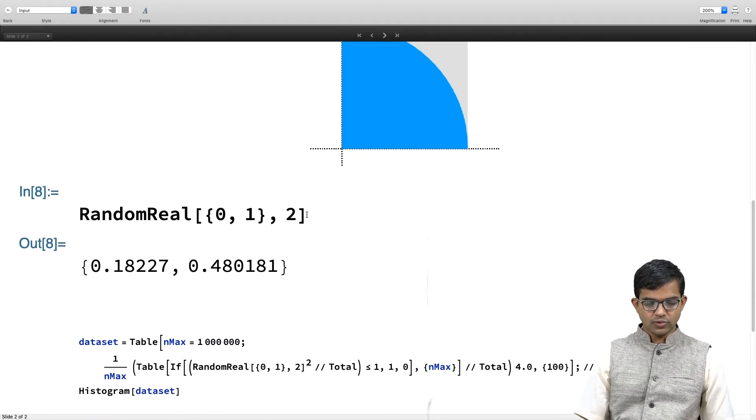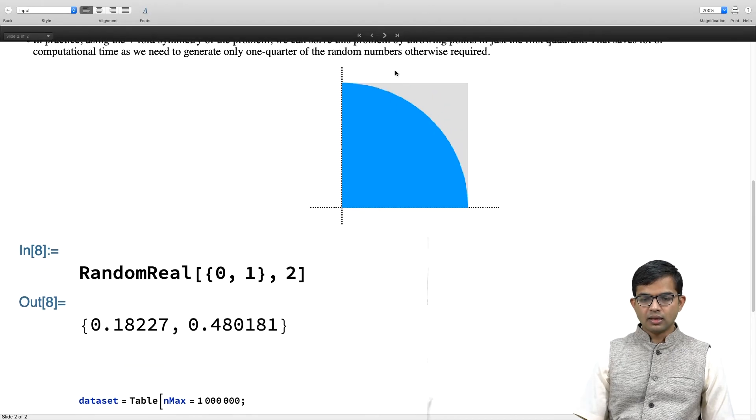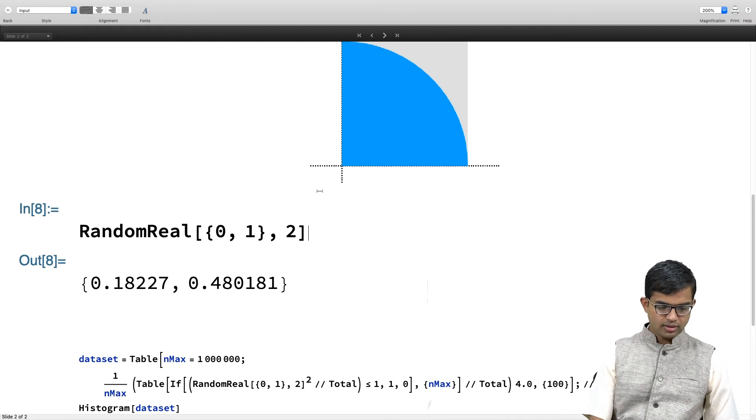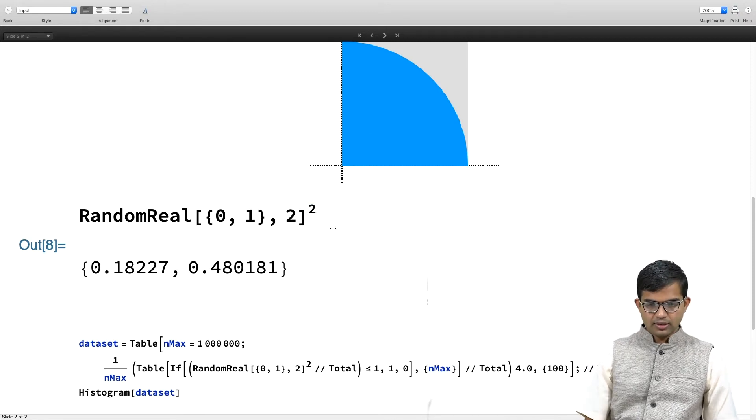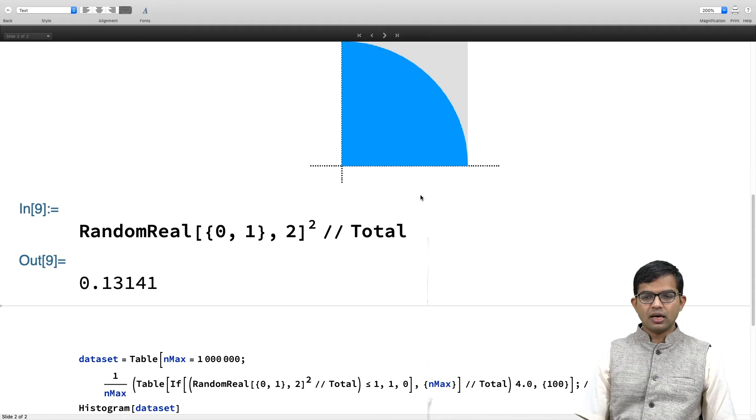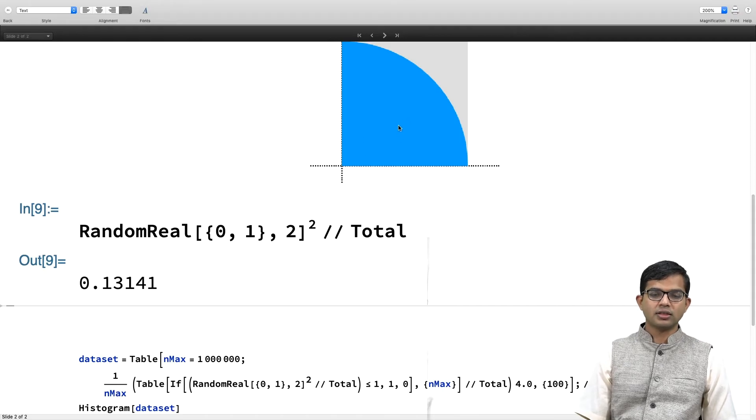I can always do this - then I can total it. Total will just give me a single number. If I find a point where x is somewhere here and y is somewhere here, it is a point like this and the distance from the origin, distance squared, is just given by x squared plus y squared and that is what I am doing.